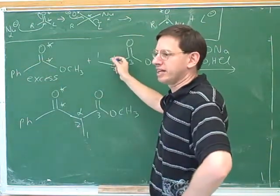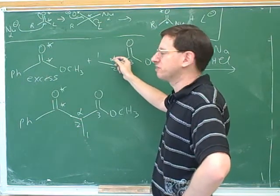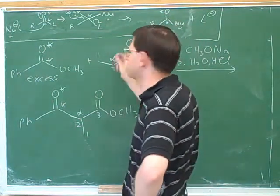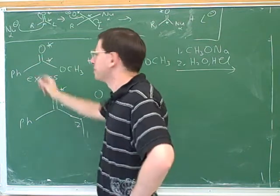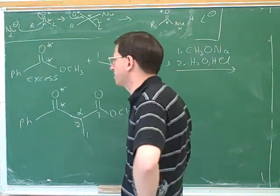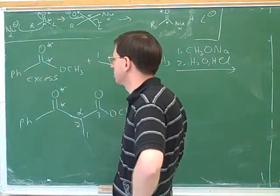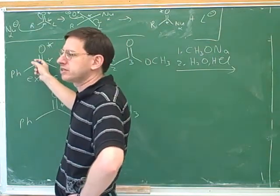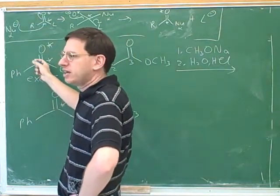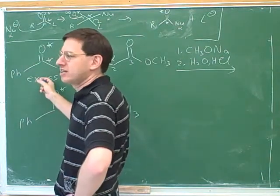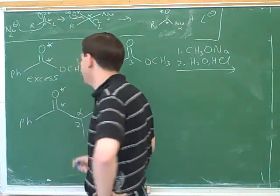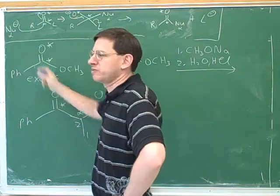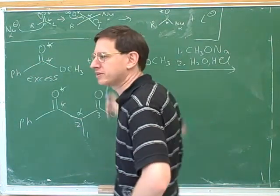The best way to ensure that is to put this compound in excess. That way, any time we form one of these enolates, who's the first thing that it's going to bump into? The first thing it's going to bump into is not one of these rare molecules over here, but one of these that are in excess. So this is another trick for making the cross-Claisen condensation work.